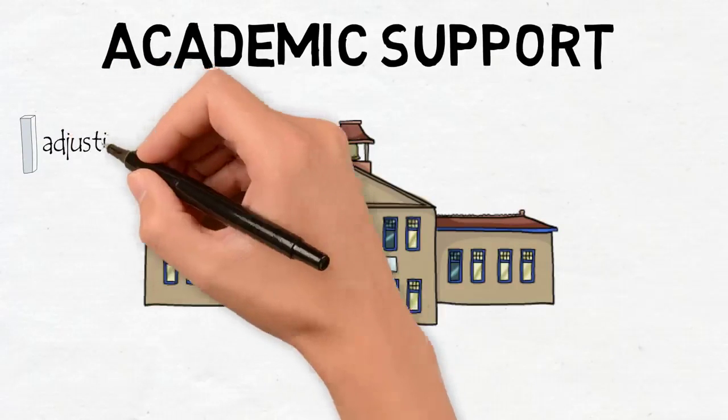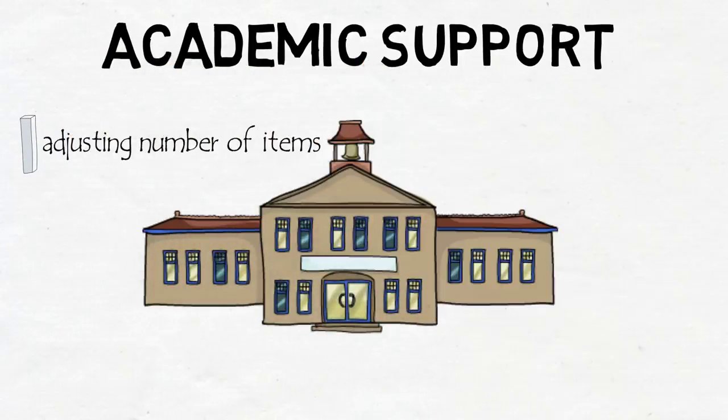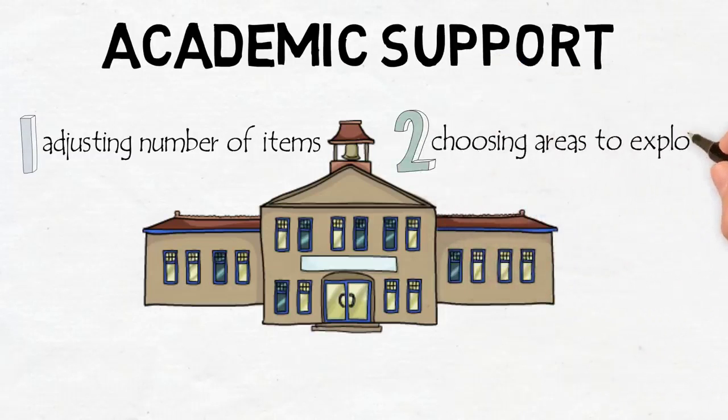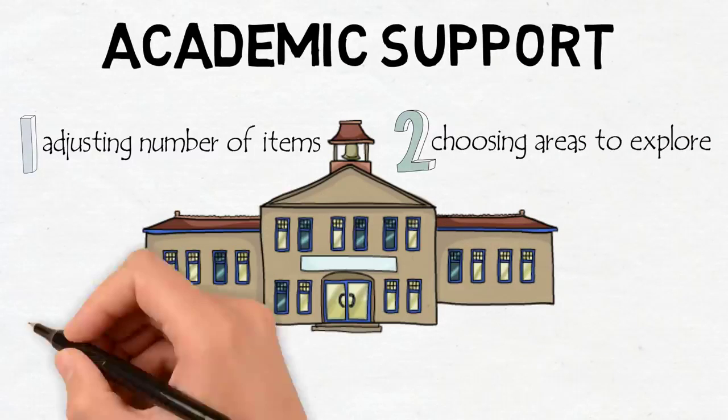Adjust the number of items the student must complete because students with ASD can be overwhelmed easily. When they become overwhelmed, it is common for them to focus on the amount of work instead of the objective. Allow students to choose areas of interest to explore within the class while at the same time restricting it to a few choices.